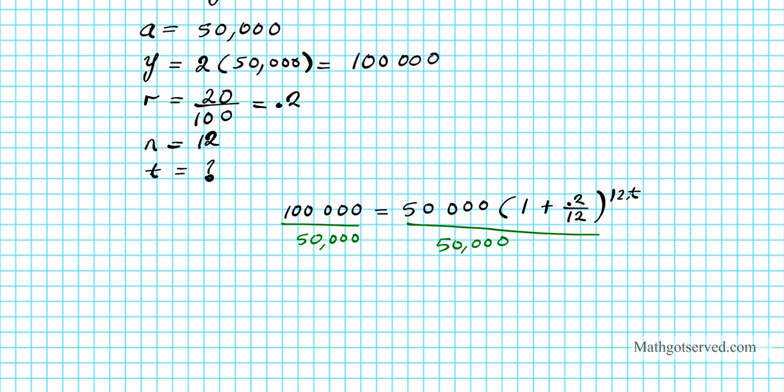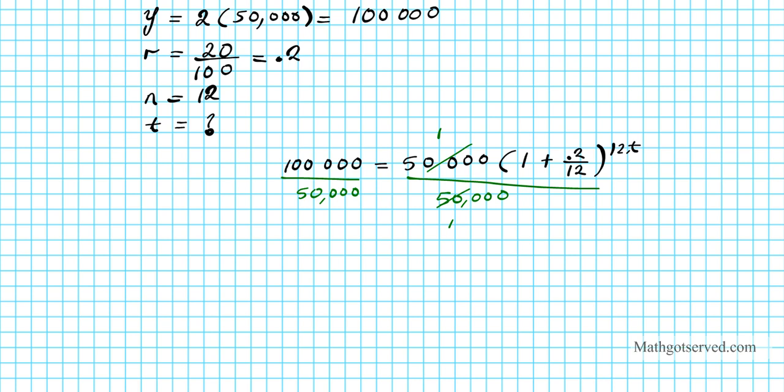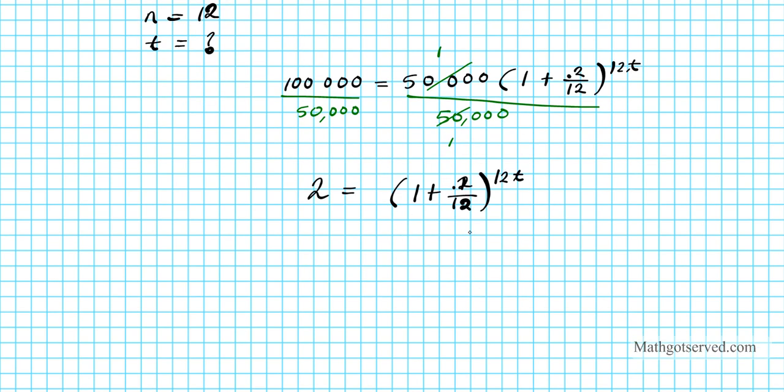We're going to get rid of the 50,000, then use properties of logarithm to get t isolated. This divides out to 1. 100,000 over 50,000 is just 2. So we have 2 equals 1 plus 0.2 over 12, raised to the 12t. I don't want to simplify this further. I want the calculator to do the work. I want my answer to be as accurate as possible, just in case we have repeating decimals or irrational numbers.